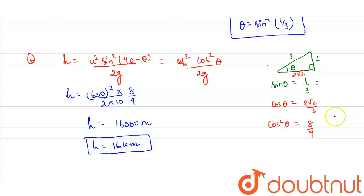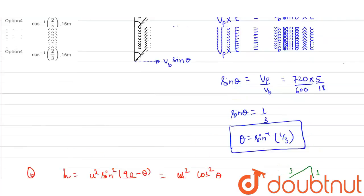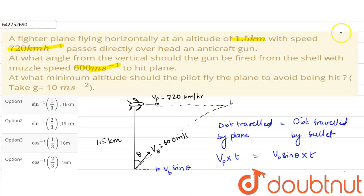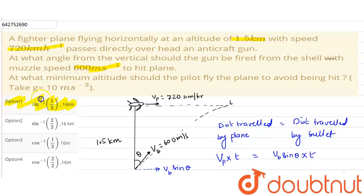The plane must fly at a minimum height of 16 kilometers. Choosing from the options, the correct answer is sin⁻¹(1/3) for the firing angle and 16 kilometers for the minimum safe altitude. Thank you.